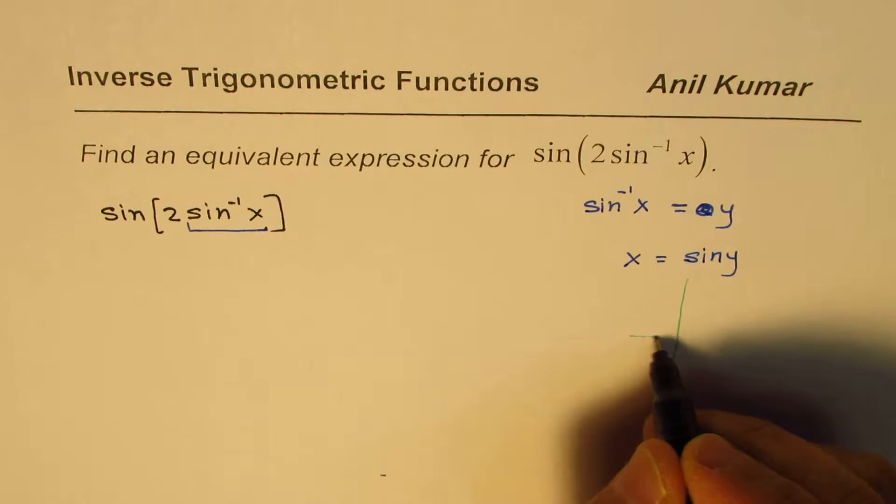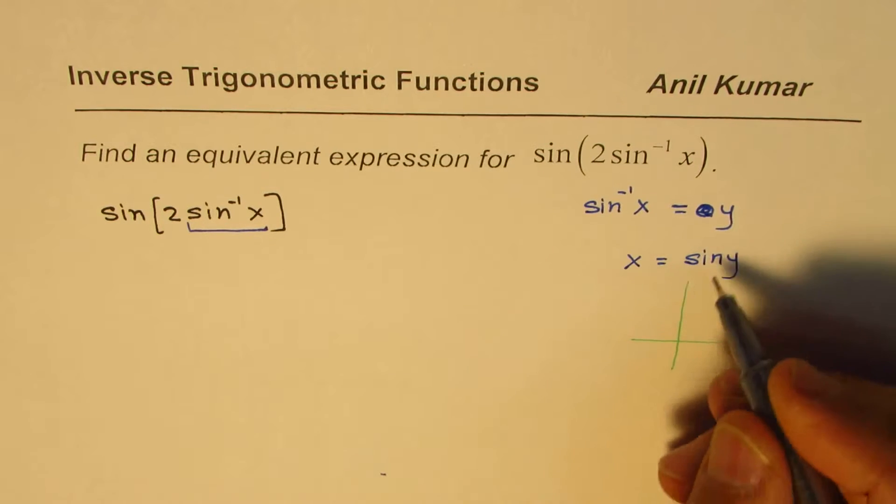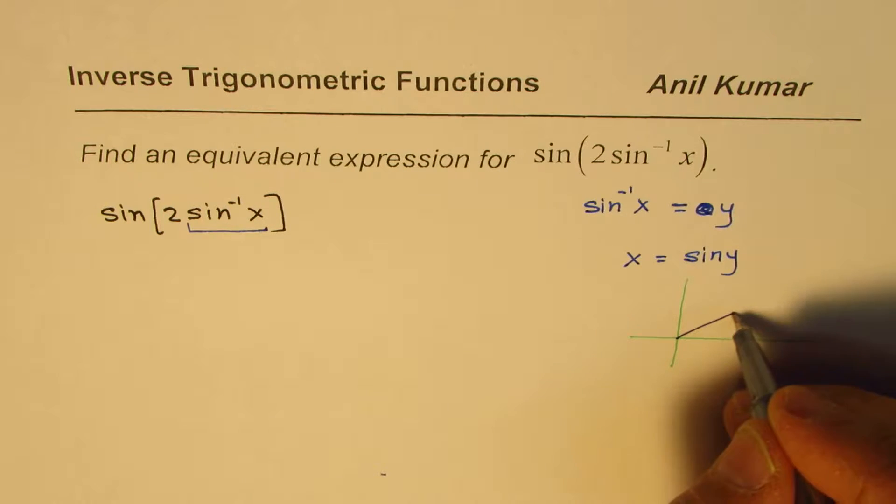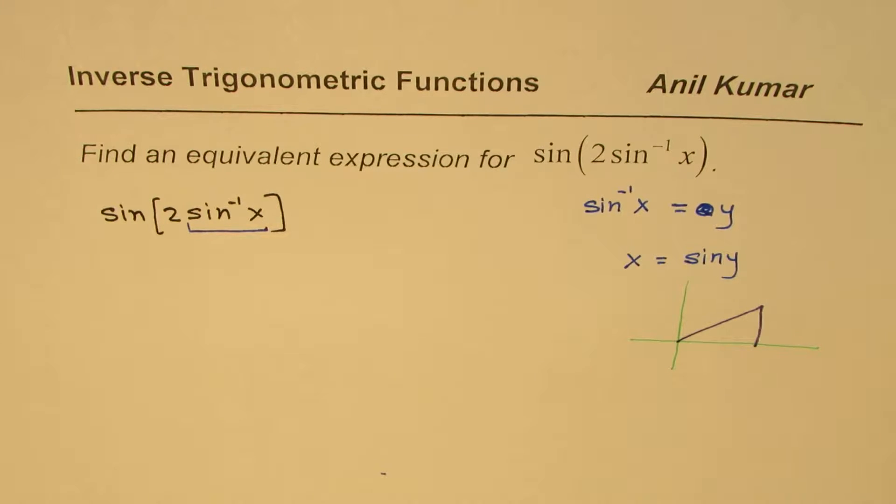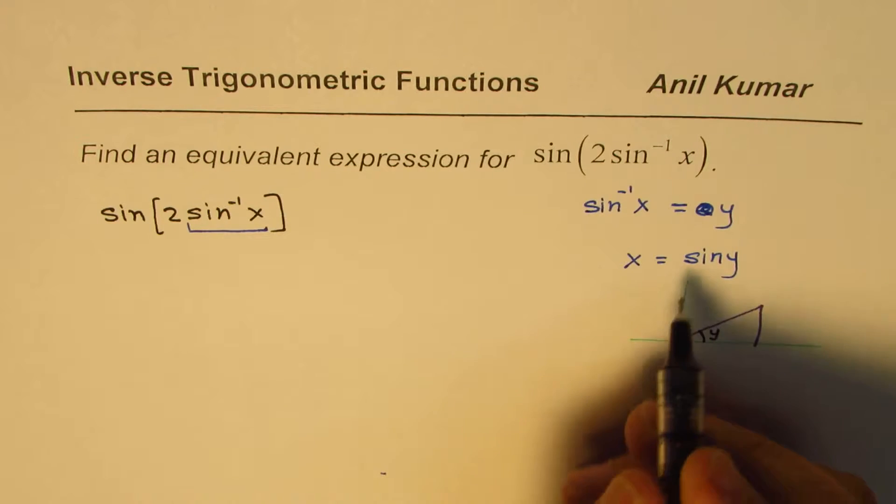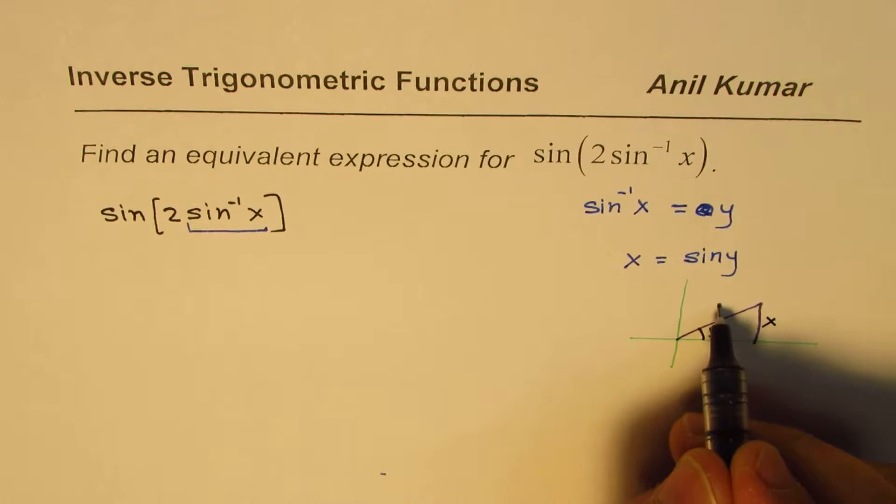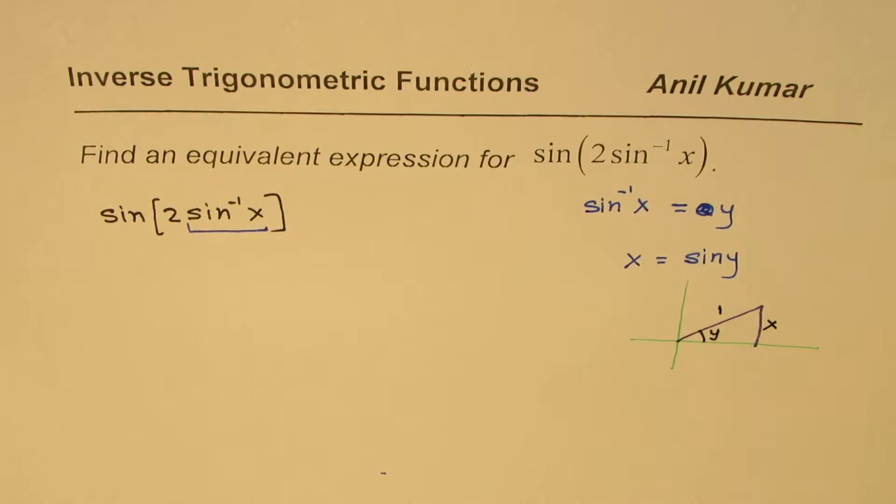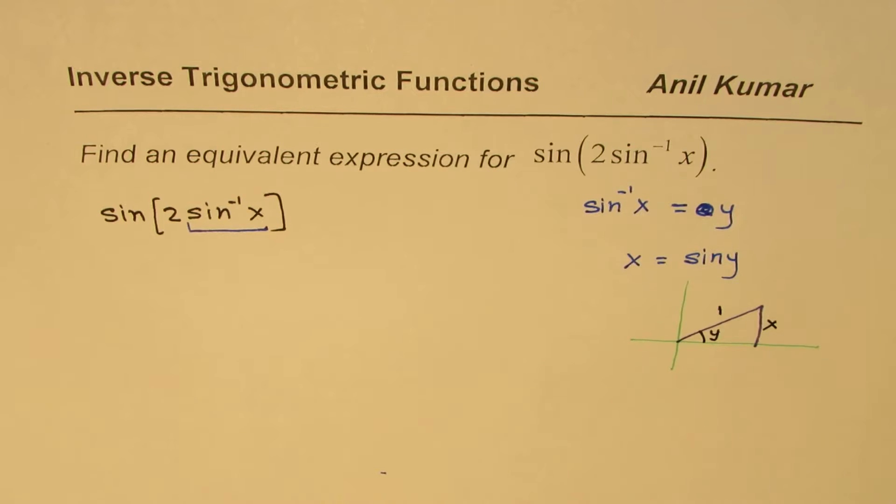I can actually sketch a triangle and then show what this should be. So in this triangle, x equals to sine y. If y is the angle, then x is the opposite side to hypotenuse. So that should be the triangle representing x equals to sine y or sine y equals to x.